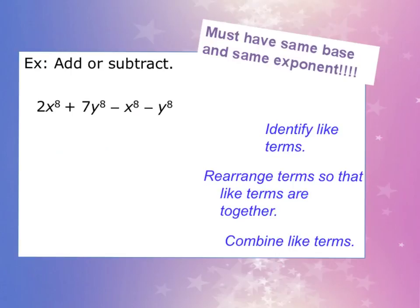Here we are going to take 2x^8 and -x^8 as like terms. Instead of rearranging, I am just circling the terms. For 7y^8 and -y^8, those would be the blue terms.